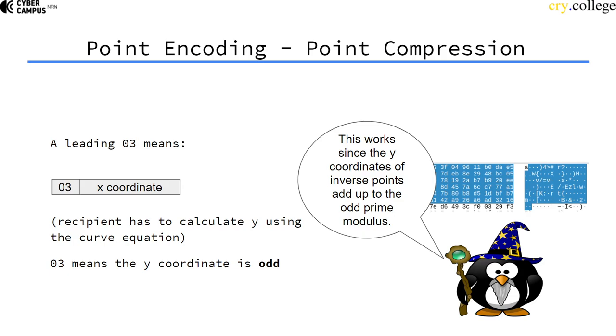This works since we work with modulus prime number, and primes by definition are always odd as long as they're larger than 2. So working in a finite field, there's one y coordinate to each x coordinate that is odd and one that is even.